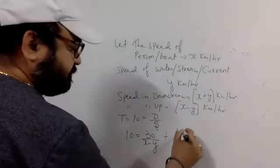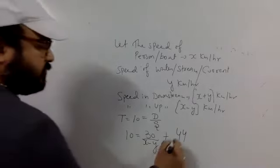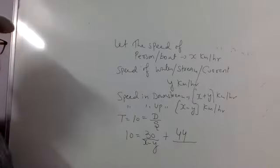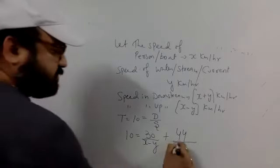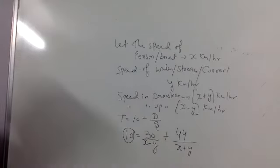And downstream kitna distance hai? 44 km. So speed kya likhenge? Upon x plus y. X plus y. Tab ja kar aapne total time kitna liya? 10. Pehla equation ready, agreed?